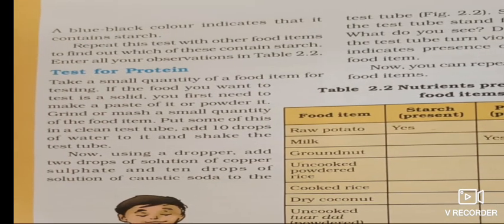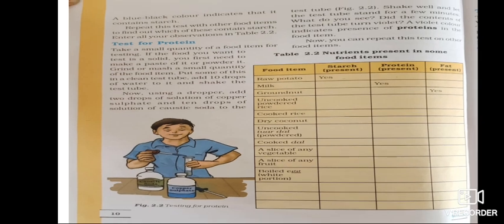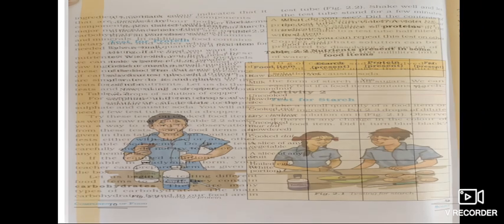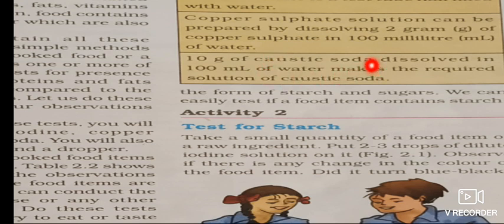Now let's know the test for protein, another component of food. For the protein test, we prepare two solutions: dissolve 2 grams of copper sulfate in 100 ml of water, and dissolve 10 grams of caustic soda in 100 ml of water. Caustic soda is a chemical substance used for cleaning and in making soaps.